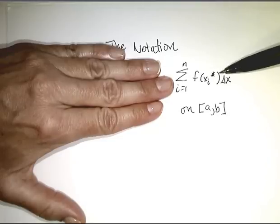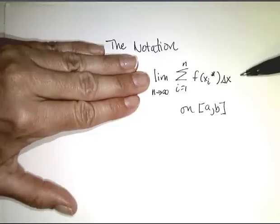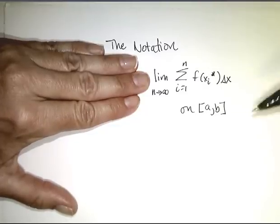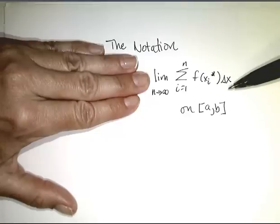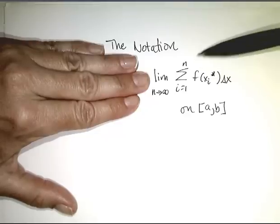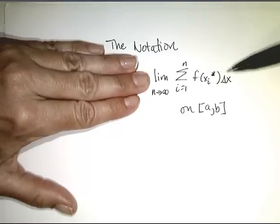But the bigger that n value, the better the approximation. And so we defined the area under that curve to be the limit as n goes to infinity of the summation of i equals 1 up to n, f of xi star delta x.